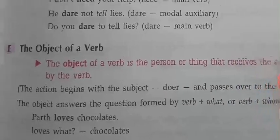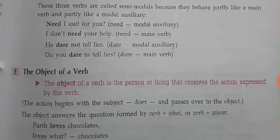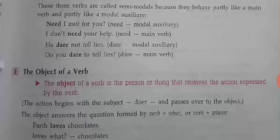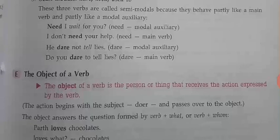Now we move to the next topic: the object of a verb. The object of a verb is the person or thing that receives the action expressed by the verb. The action begins with the subject, is expressed by the verb, and passes over to the object. The object answers the question formed by verb plus 'what' or verb plus 'whom'.